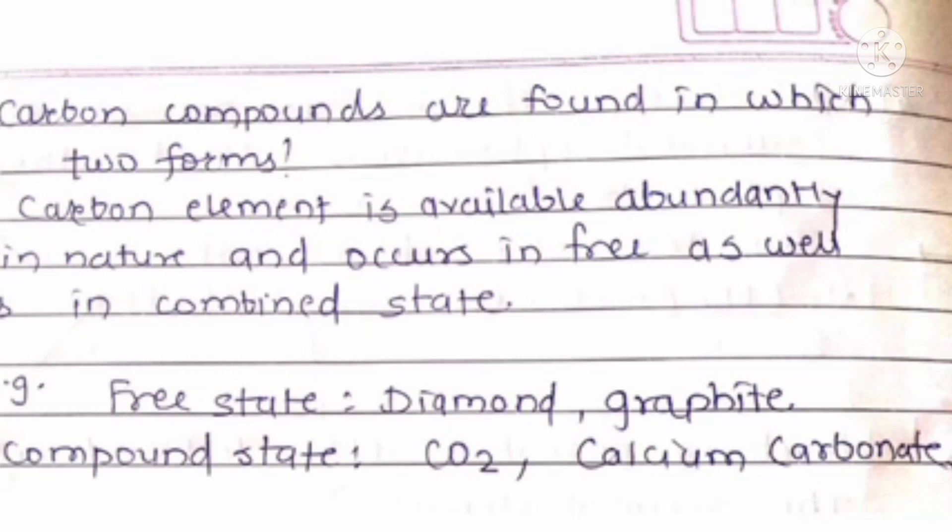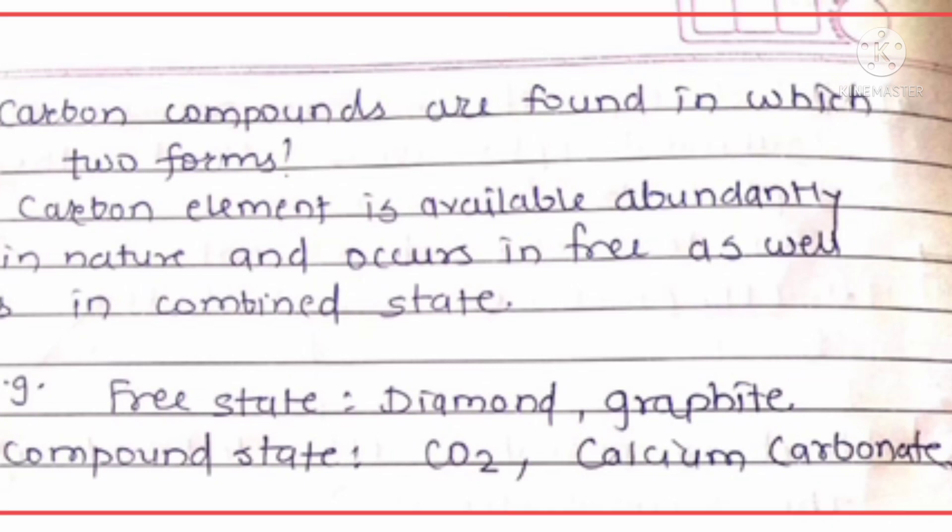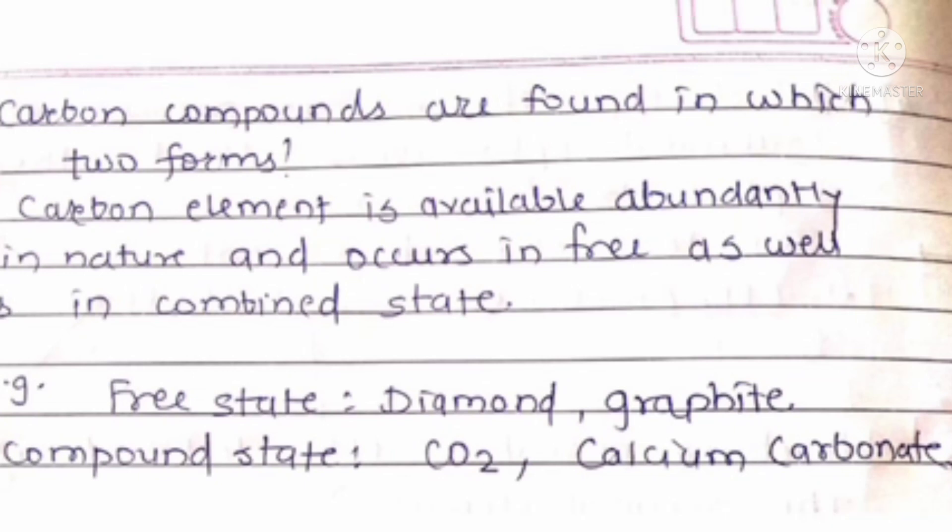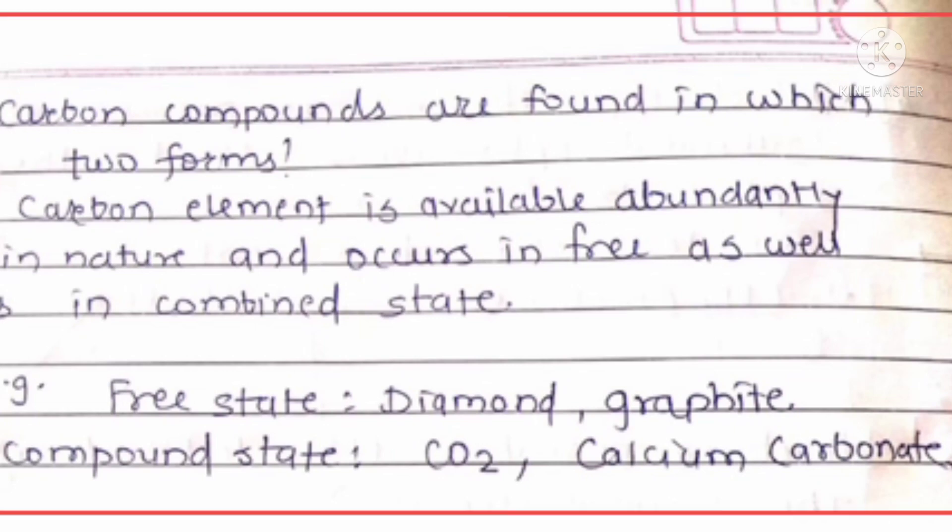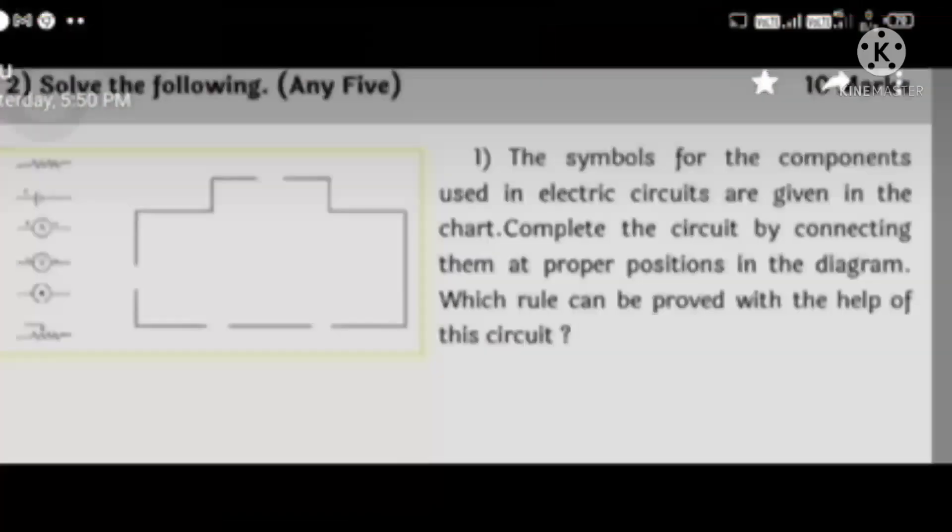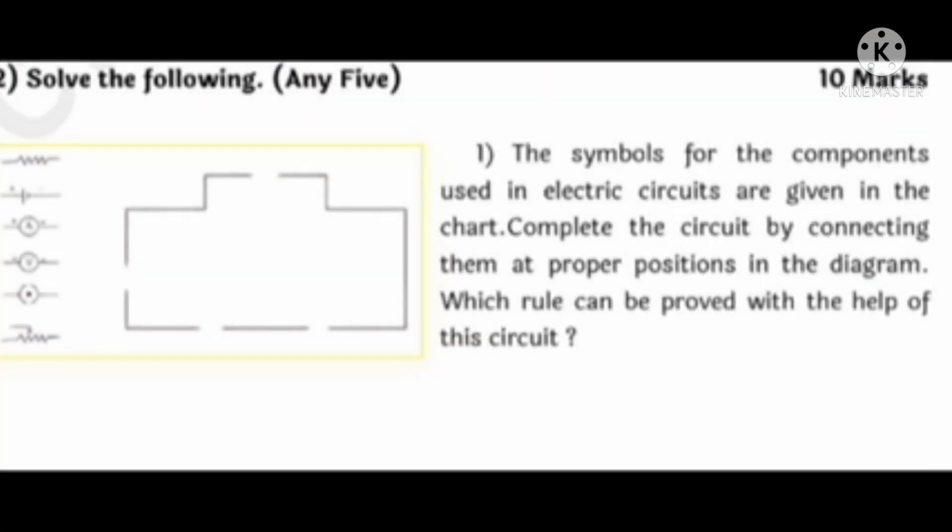Carbon compounds are found in which two forms? Answer: Carbon element is available abundantly in nature and occurs in free as well as combined state. Example: free state - diamond and graphite; in compound state - carbon dioxide, calcium carbonates, etc.